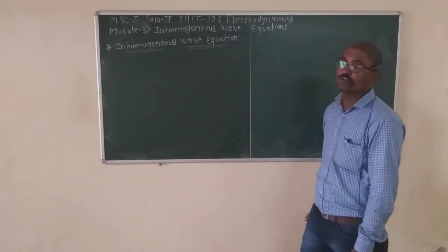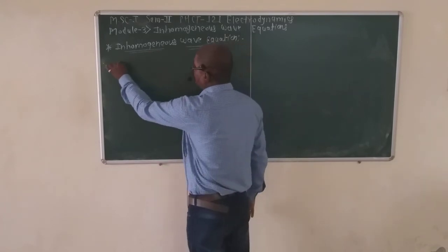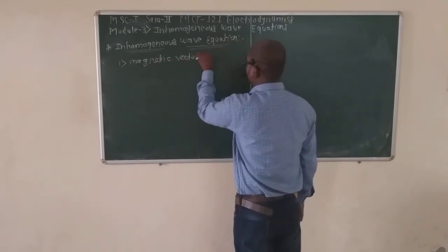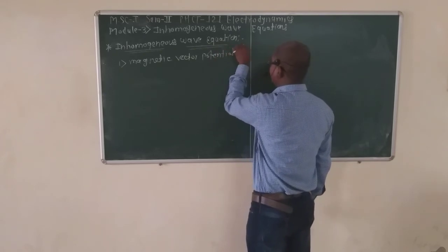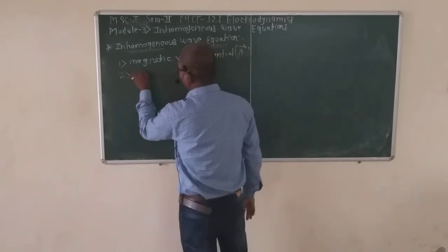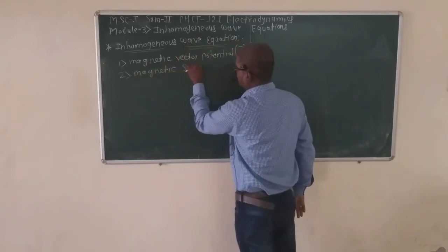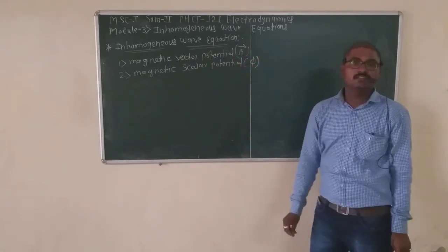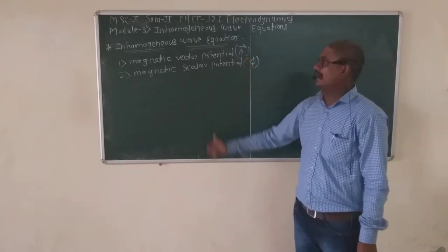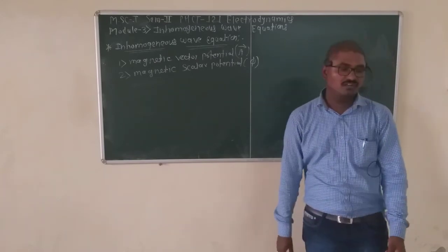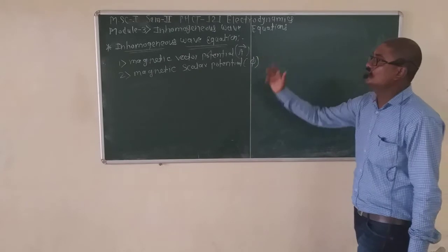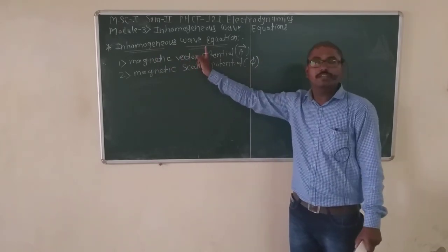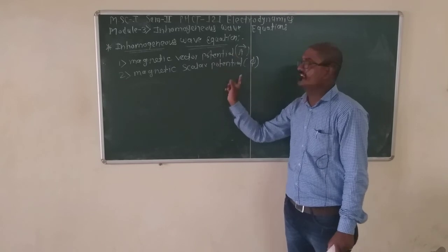Generally, we know the two electrodynamic potentials. The first is the magnetic vector potential, that is A-bar, and the second one is the scalar potential, that is phi. Our aim is to obtain the inhomogeneous wave equation in terms of the magnetic vector potential A-bar and scalar potential phi.